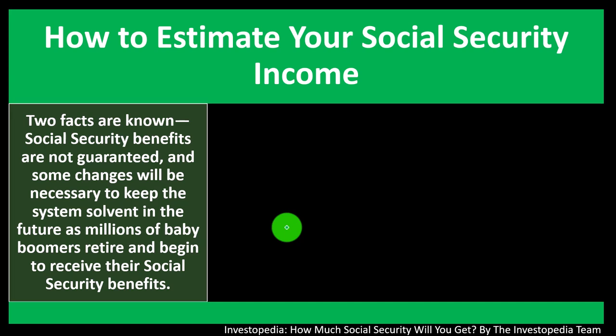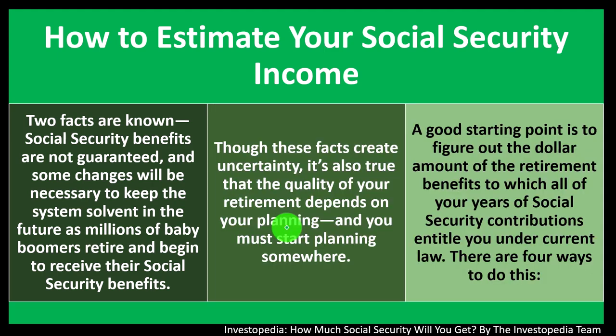Social security benefits are not guaranteed, and some changes will be necessary to keep the system solvent in the future as millions of baby boomers retire and begin to receive their benefits. The program is not designed so that your money is invested and returned to you — the money going into the program is paying for current recipients. So when you have fluctuations in the population, you can have situations where fewer workers are paying for a large bulk of people in retirement, which causes problems on the debt side of things.